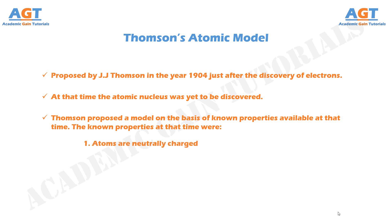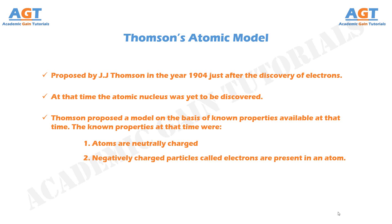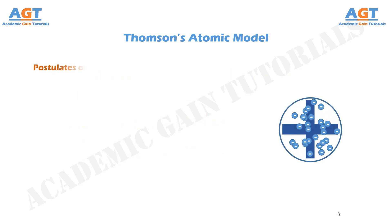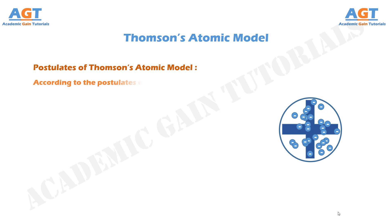The only properties of the atom known at that time were: number 1, atoms are neutrally charged; and number 2, negatively charged particles called electrons are present in an atom. So, based on these known properties, the postulates of Thomson's atomic model were proposed.